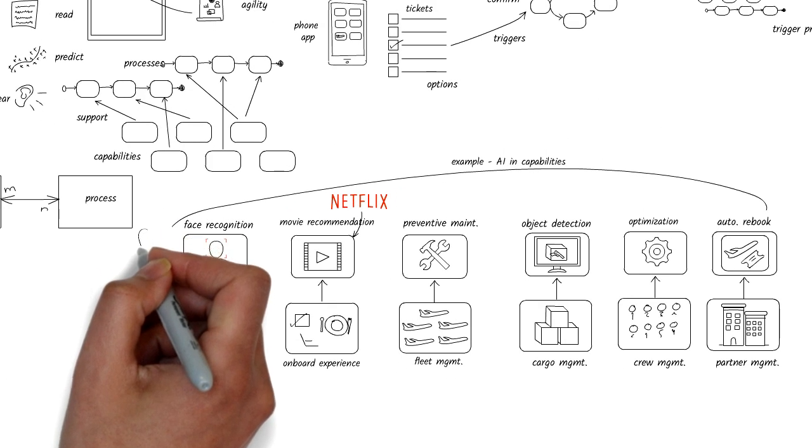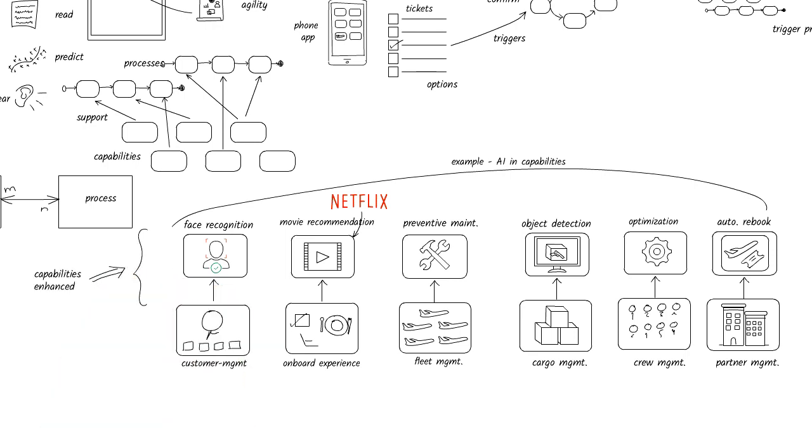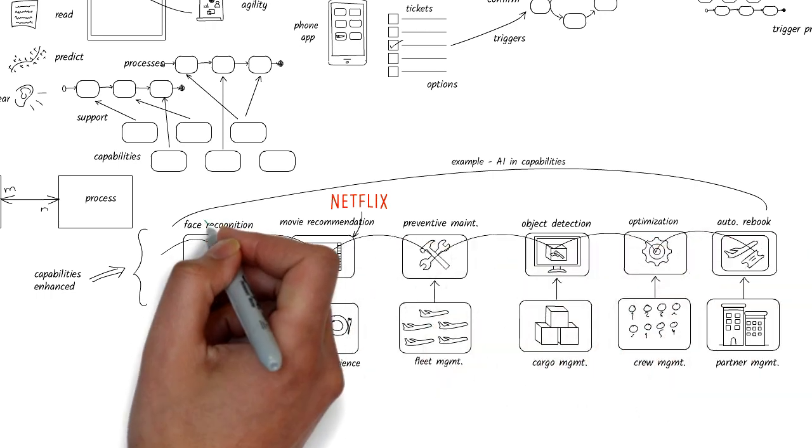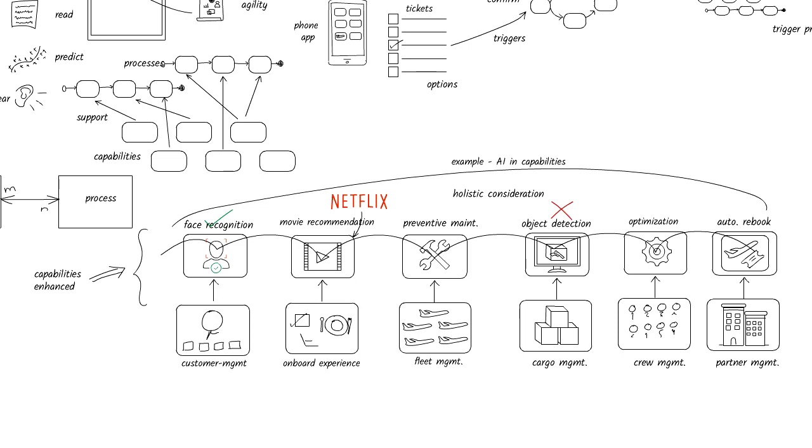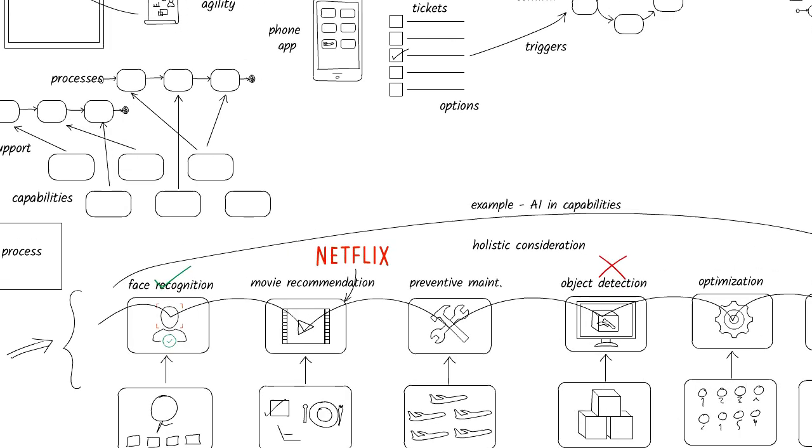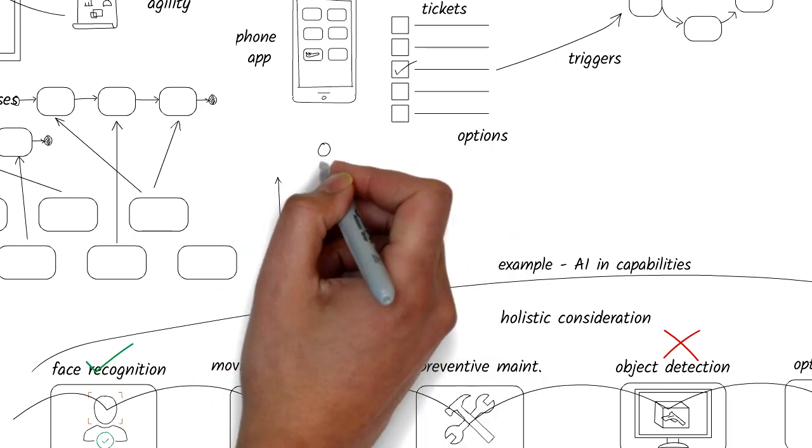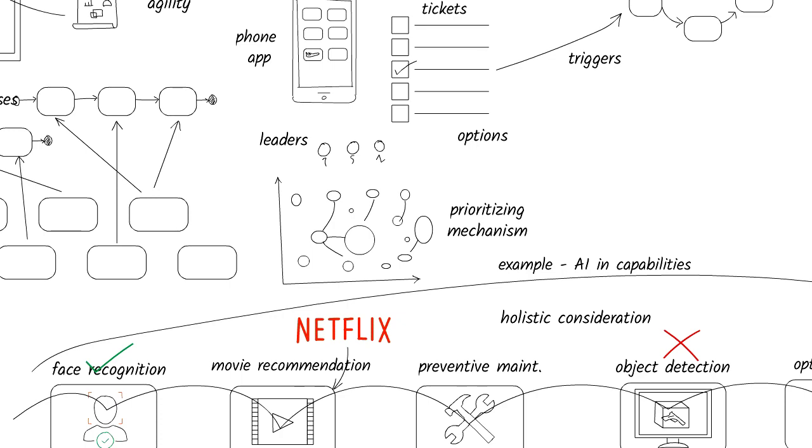I won't cover all the capabilities that are touched here, but as you can tell, each capability can be individually enhanced in some ways using artificial intelligence. It's better to make these enhancements holistically in the context of an end-to-end customer journey. Face recognition at the front end, but a lousy baggage claim experience will make my overall experience bad. It is important for leaders to consider the enterprise scenarios, identify the capabilities that provide a competitive differentiation, and prioritize the work of AI across these.